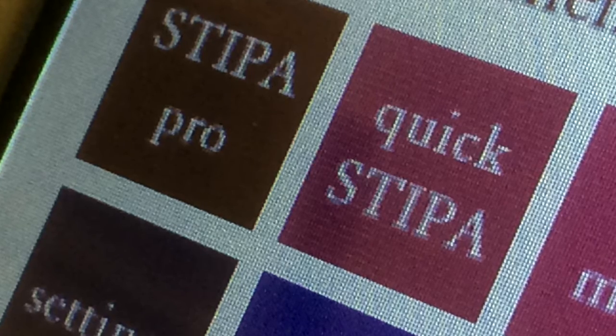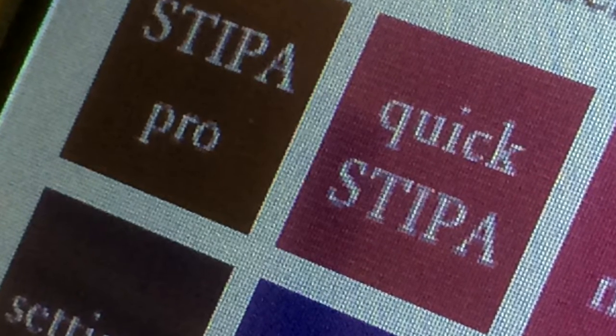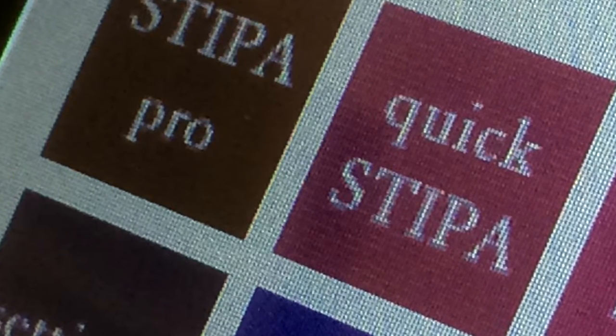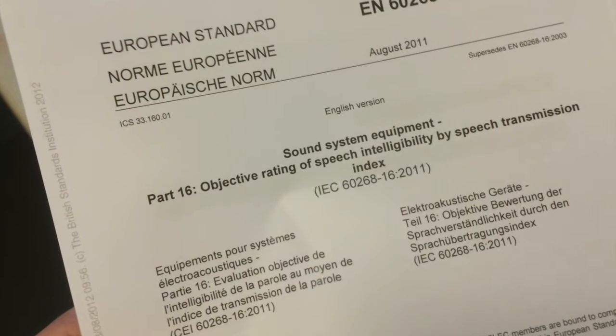The best way to objectively measure speech intelligibility is by means of the STIPER method. This is a fast and efficient implementation of the Speech Transmission Index method, standardized through various international and national standards.